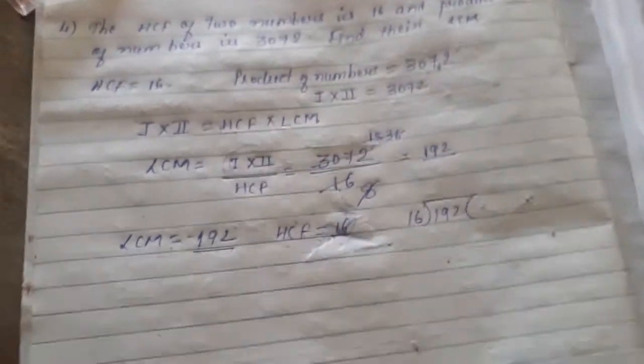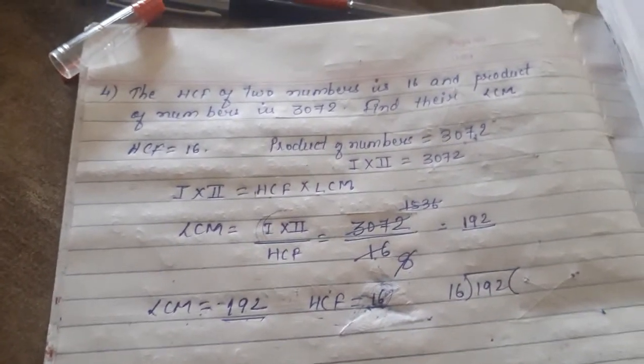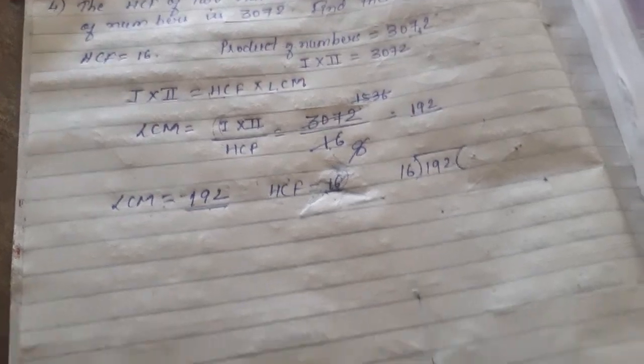So product of the numbers, means first number multiply by second number, we write that value as product of the numbers.